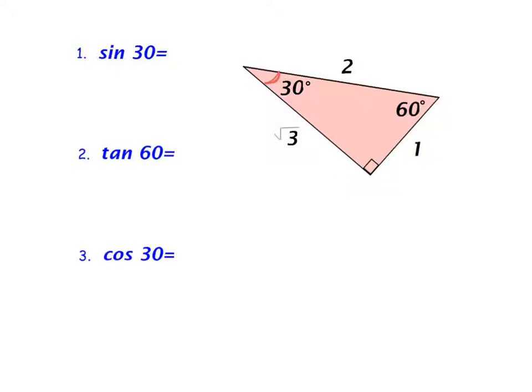And for sine, it is opposite over hypotenuse. So the opposite side of 30 is over here at 1. The hypotenuse is 2. So the sine of 30 degrees is 1 half.